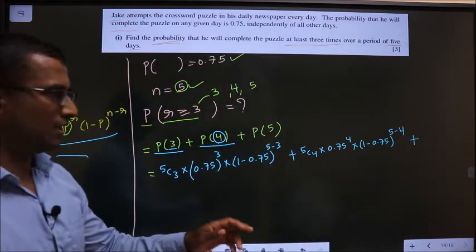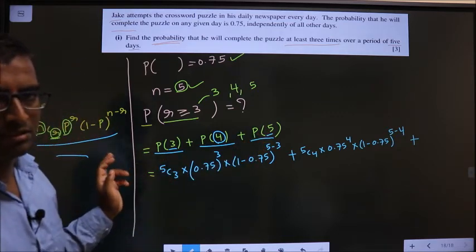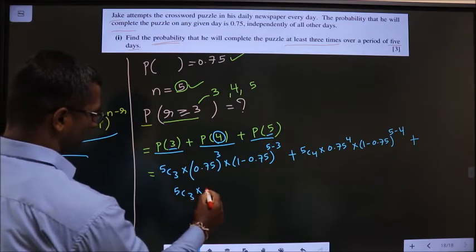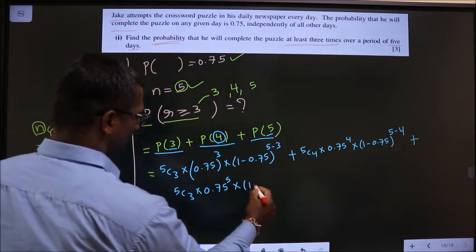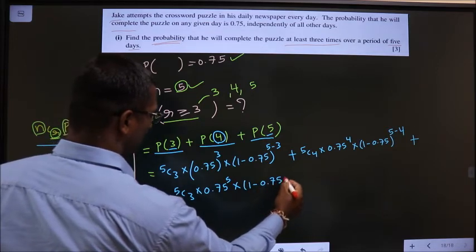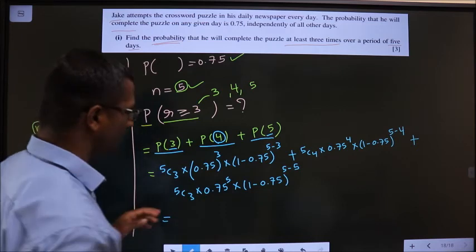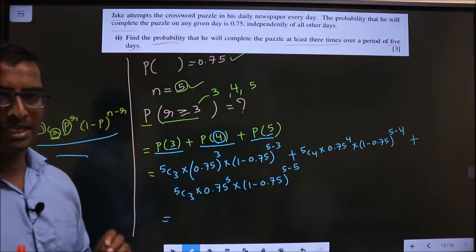Now replace r equal to 5 in this formula: 5C5 × 0.75⁵ × (1-0.75)^(5-5). So the sum of these 3 terms will be our answer.